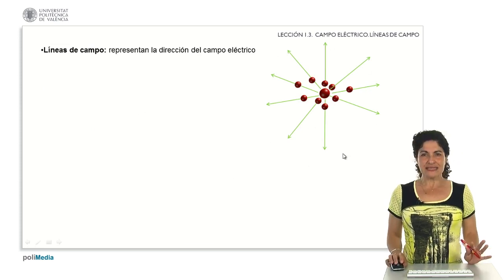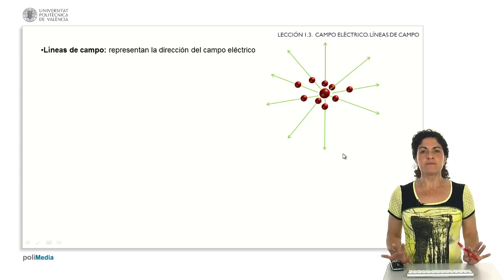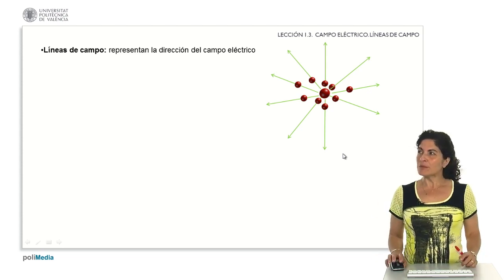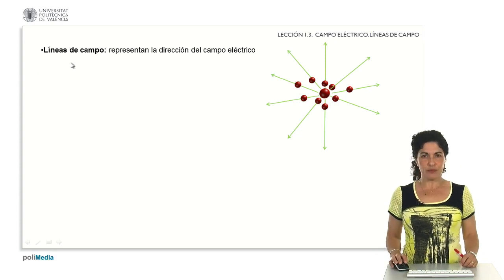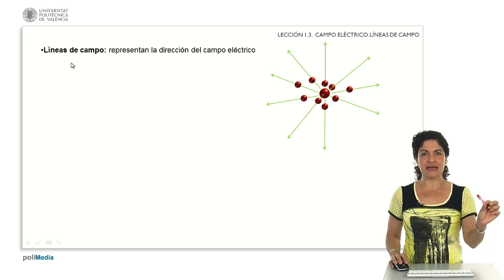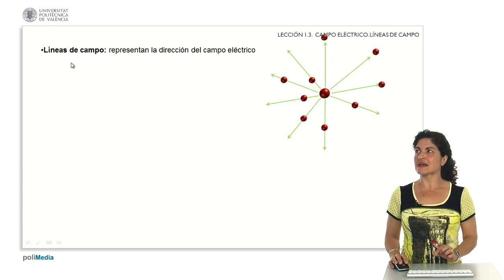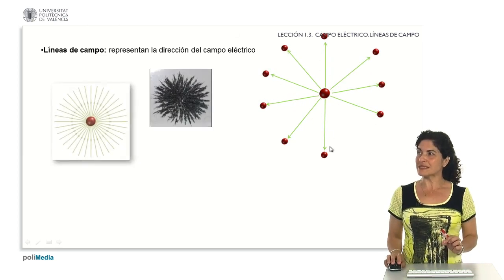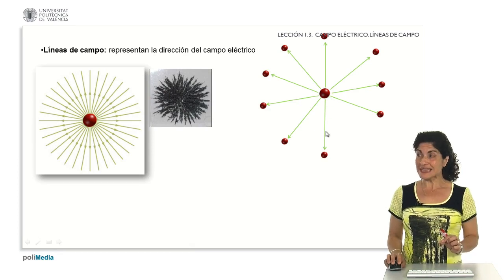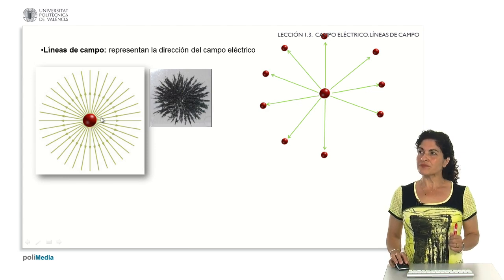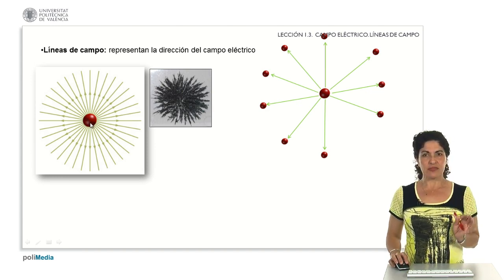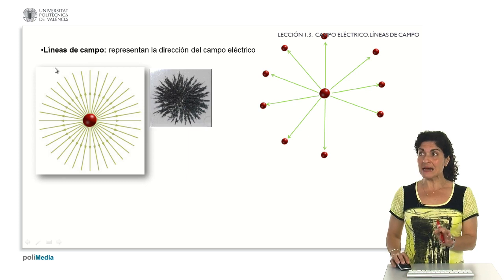To analyze the interactions that test charges undergo near charged particles, we use the concept of electric field lines. These are imaginary lines representing the trajectories that positive test charges would follow near the charge causing the electric field. They are tangent to the electric field vector at each point where it is defined. For a positive electric charge, since the test charge experiences repulsion, the electric field lines have a radial structure leaving the charged particle.